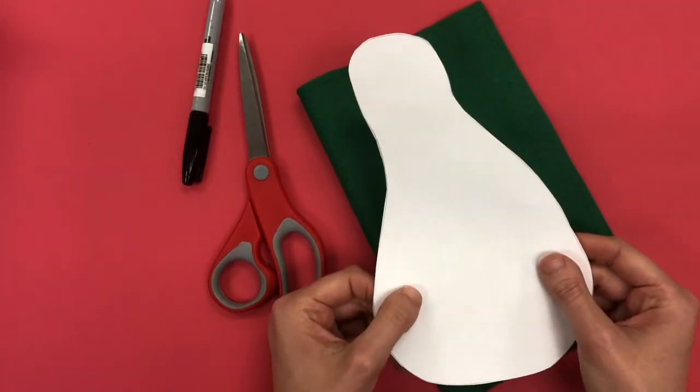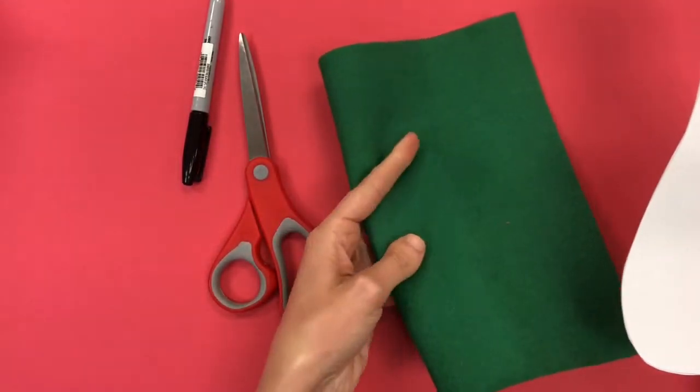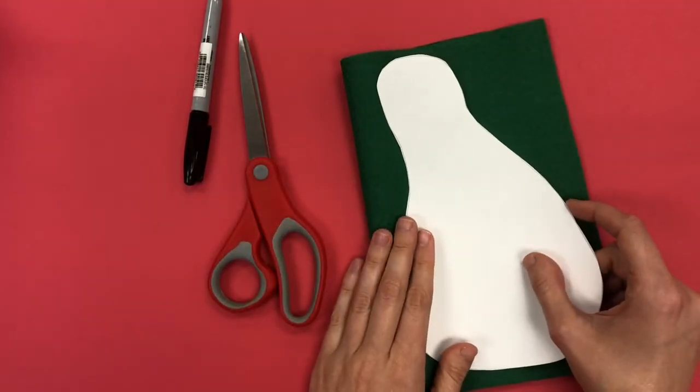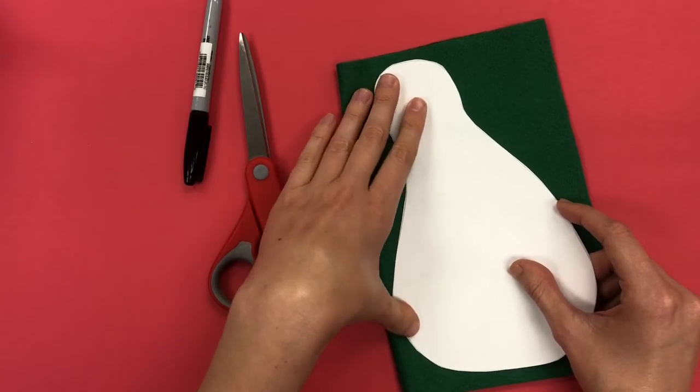I have my pattern for my ugly doll, my felt, a pair of scissors, and a sharpie, and I'm ready to cut out my pieces to create my plushie.